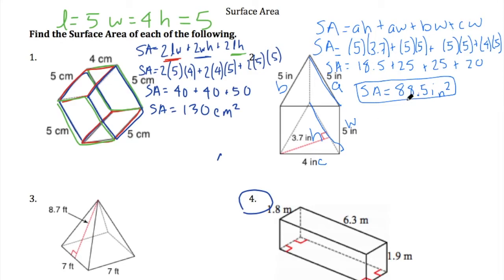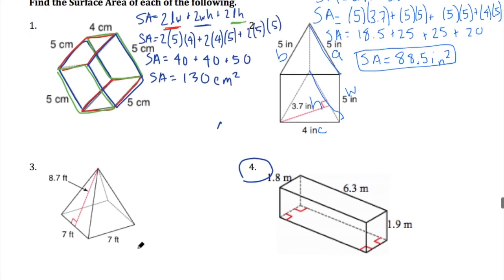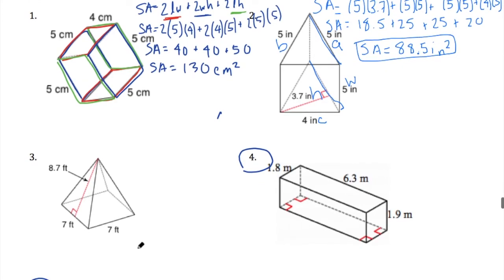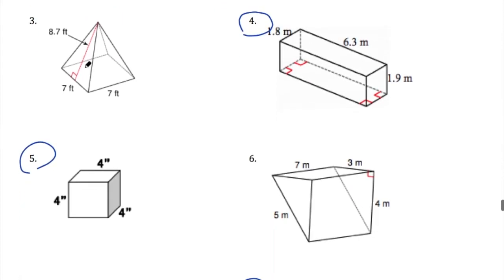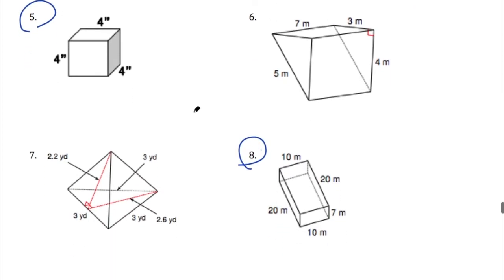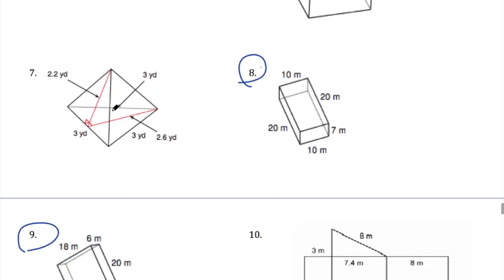Now, number 3, you'll notice, uses triangles, but is not a triangular prism. It's technically not a PSSA topic. For number 3, you're going to have to find the area of the pieces individually. Treat each of the triangles as a separate triangle. You can recognize that there's four of them. Find the area of one triangle, multiply it by four, and then you've got a square on the bottom to add to that. Same thing here, another triangular pyramid.